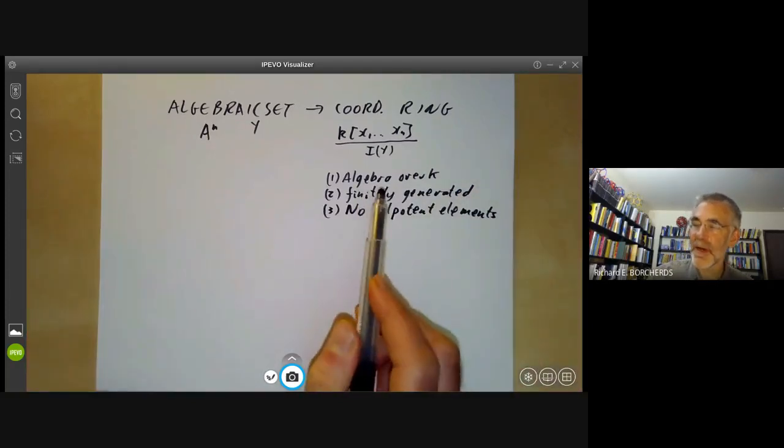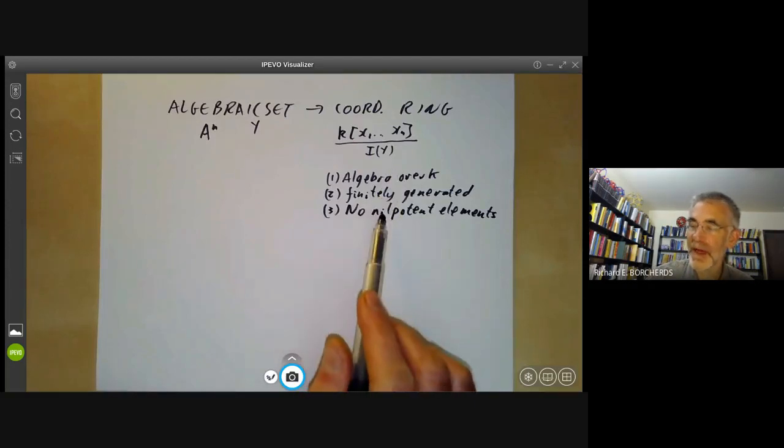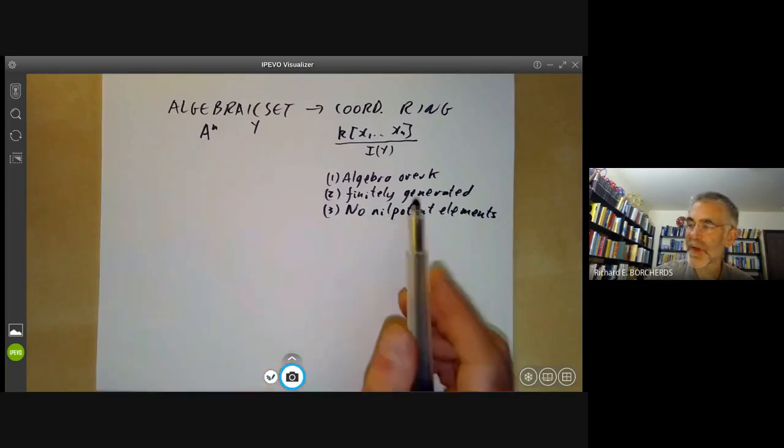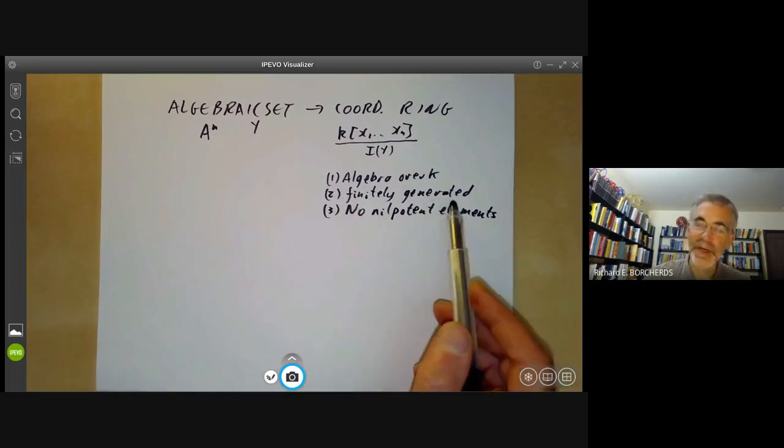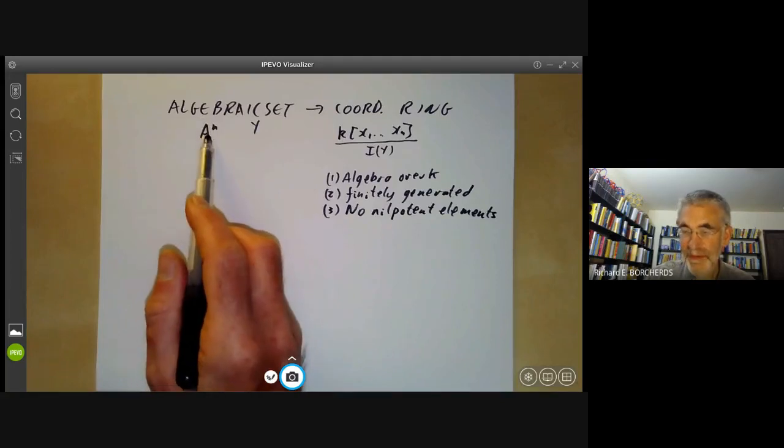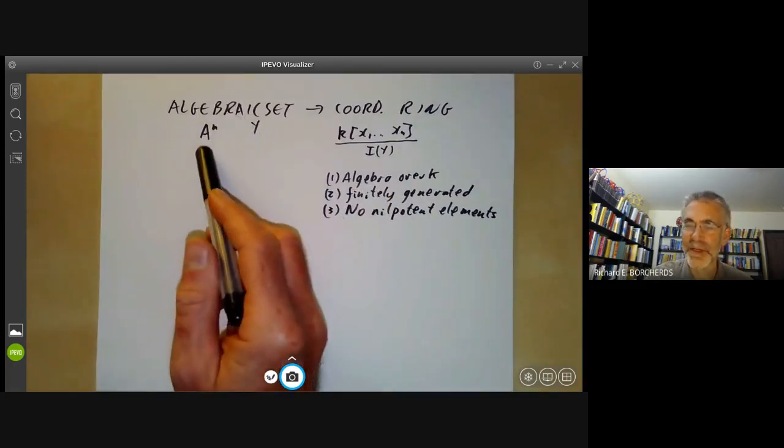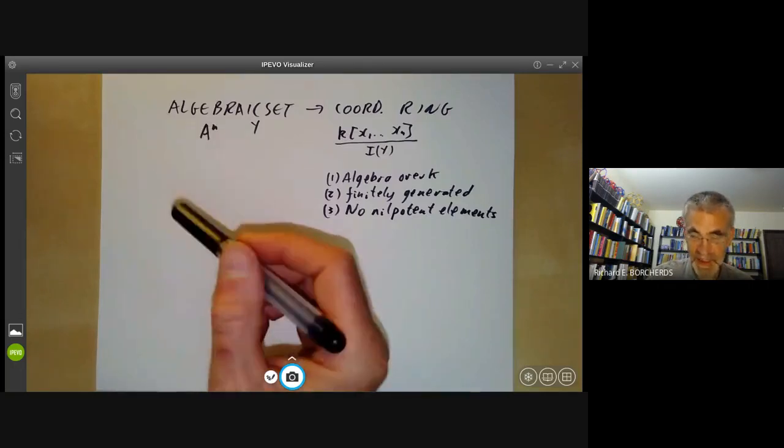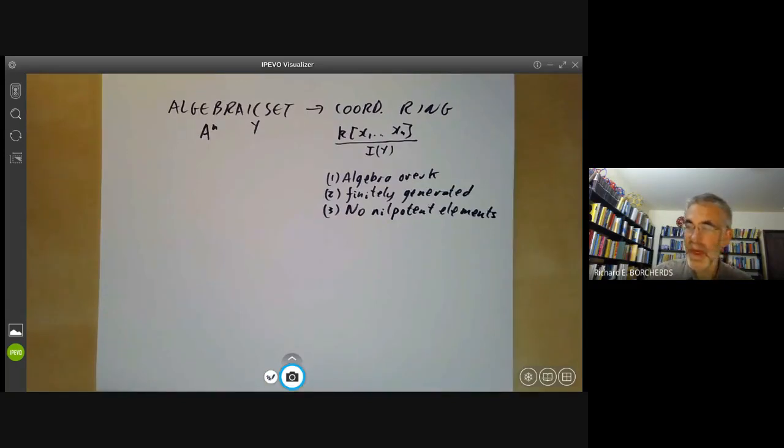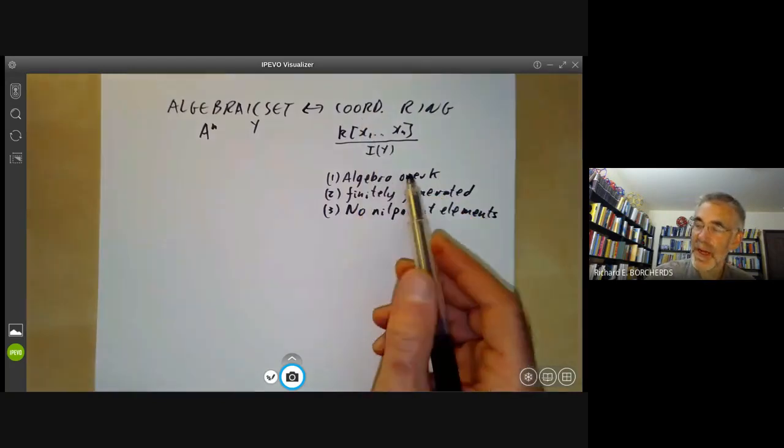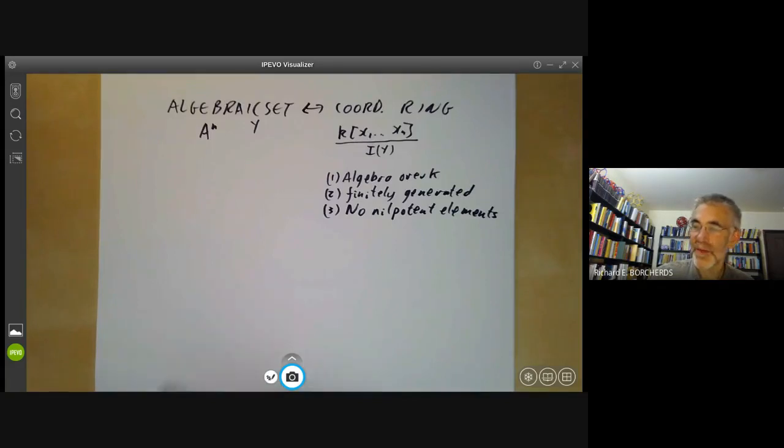On the other hand, if you've got an algebra with these three properties—so it's finitely generated over k and there's no nilpotent elements—then by the strong Nullstellensatz it corresponds to an algebraic set. The algebraic set it corresponds to isn't quite unique because it depends on your choice of generators. If you choose different collection of generators, the corresponding algebraic sets are essentially isomorphic in some sense—there are polynomial maps between them that are inverses of each other. So informally, we can think of algebraic sets up to some sort of isomorphism as being more or less equivalent to algebras with these three properties. The technical term is: the category of algebraic sets is equivalent to the opposite of the category of coordinate rings.